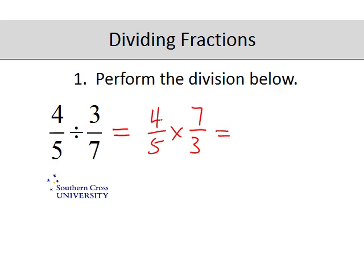So this becomes 4 sevenths are 28, 5 threes are 15. That's an improper fraction so 15 goes into 28 once and there will be 13 fifteenths left over.